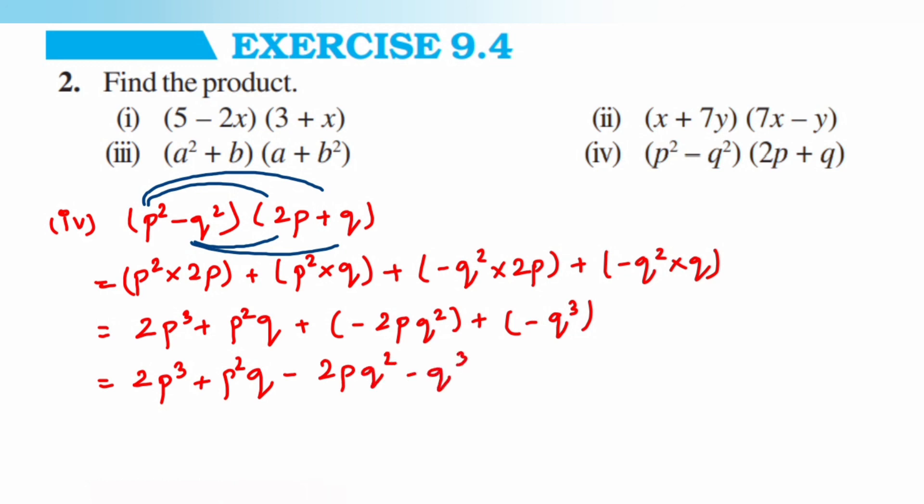There are no like terms here, so the answer is 2p cubed plus p squared q minus 2pq squared minus q cubed. With this we are done with the second question of exercise 9.4. I hope you have understood this. If you have any questions or want to say something, you can leave a comment below. Thank you so much for watching!